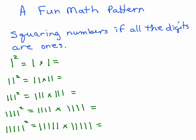In other words, remember squaring means multiplying a number times itself. So 1 squared would be 1 times 1, and that would give us 1.